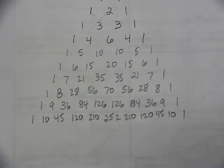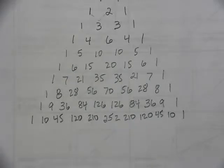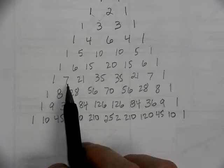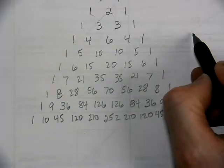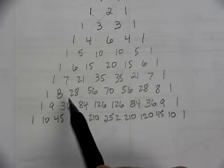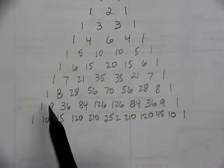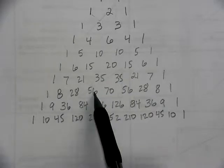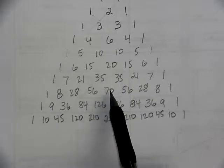You could continue this pattern on and on repeatedly — there's no end to it. Once it gets past this point, it gets a little crazy. This is your Pascal's Triangle. We could calculate what 8C4 is — 8C0, 8C1, 8C2, 8C3, and 8C4 is 70.